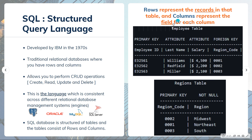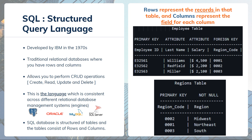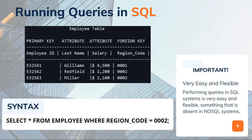That foreign key, region code, in the employee table is the primary key in the regions table — that's the relation between both tables. We might have multiple more tables linked together. The most important thing is to understand the architecture and the links between all tables. That's why SQL is very flexible in terms of query performance.